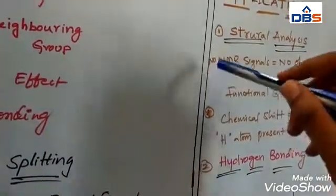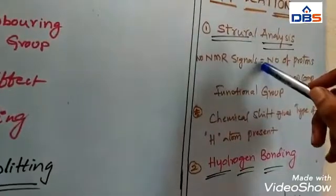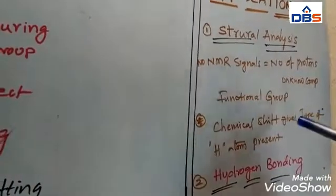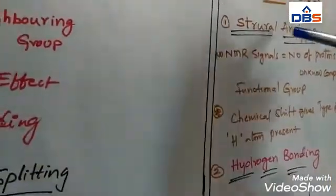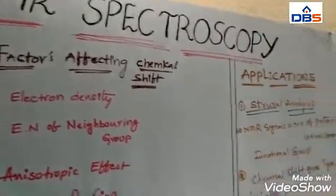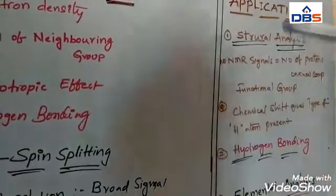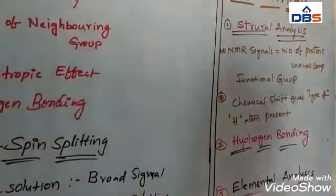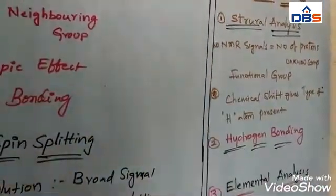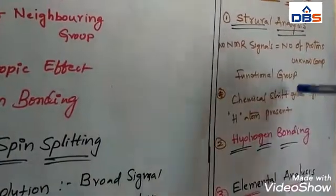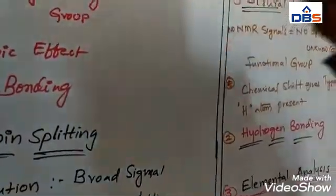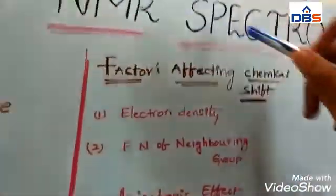So, suppose you take the number of NMR signals — it is equal to the number of protons in the unknown compound. And the functional groups are always identified by using NMR spectroscopy. Another important thing is the chemical shift formed in NMR spectroscopy, which always gives the number of hydrogen atoms present in a molecule. That is the main important thing which is analyzed by using NMR spectroscopy.